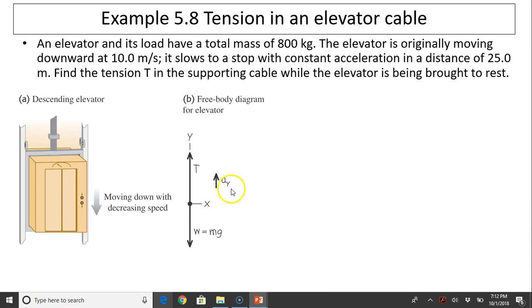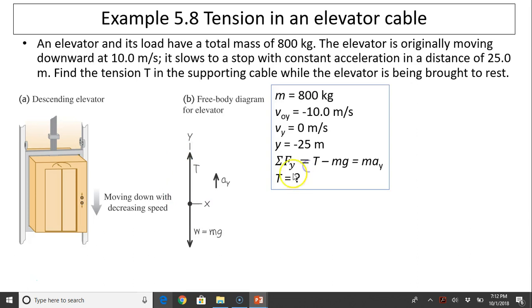We know acceleration is upward because the elevator is coming downward to a stop. Write down what is given. Mass is 800. Initial velocity is negative 10 because it's downward. According to our coordinate, upward is positive, so initial velocity is negative. Final velocity is zero. Also displacement, you're moving downward, displacement is negative 25 meters. We know sum of the force is T minus Mg, which equals mAy. The answer is what is T?